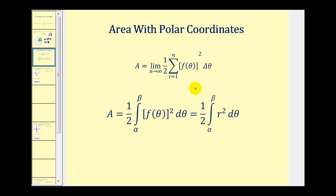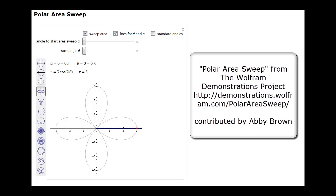To develop this idea, let's go ahead and take a look at an animation. So here's a rose with four petals, and watch what happens as we increase theta as we start to sum the area of those circular sectors. You can see it starts to accumulate the area bounded by the polar curve from the area of those circular sectors.